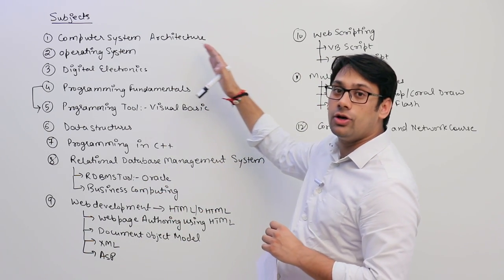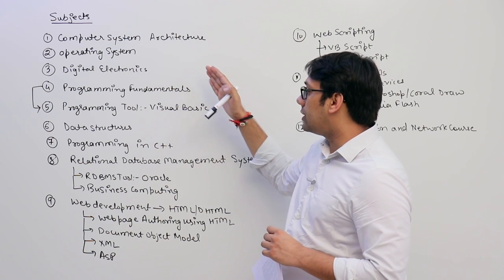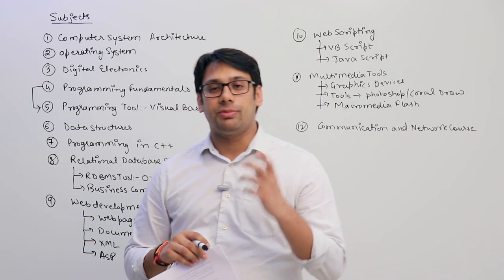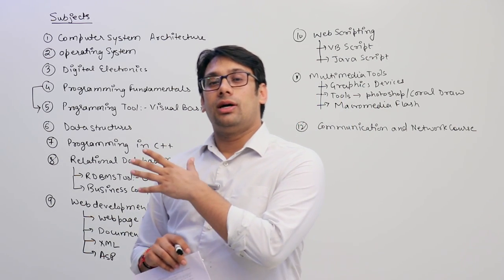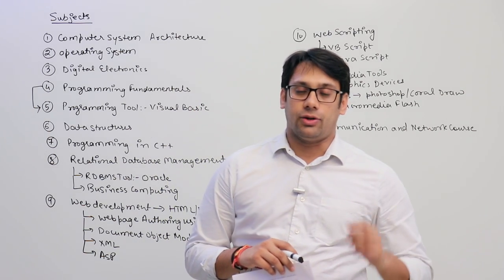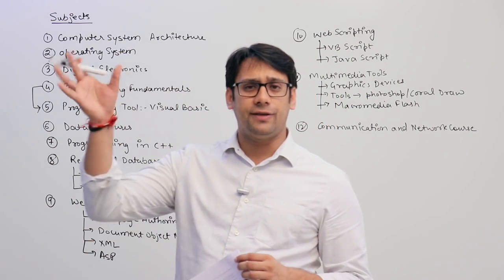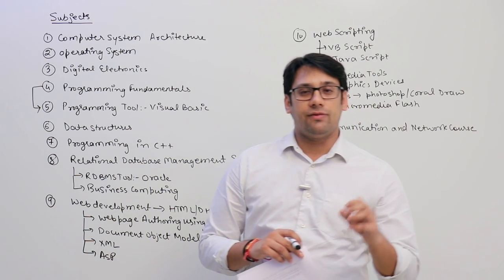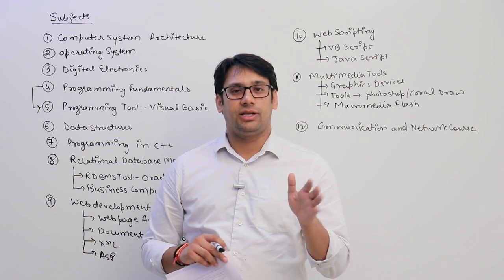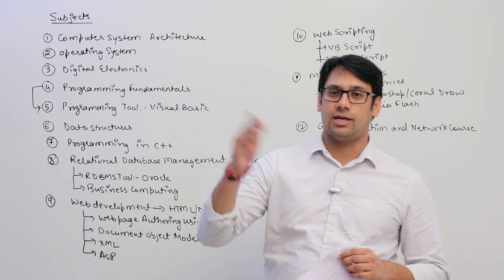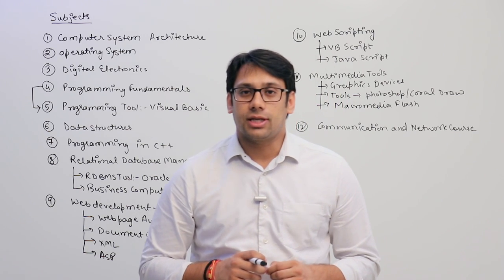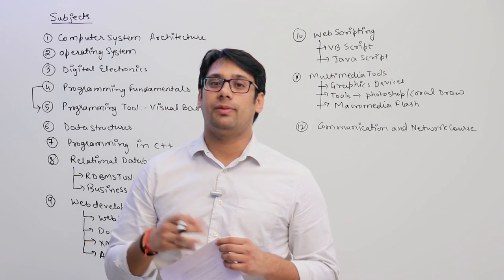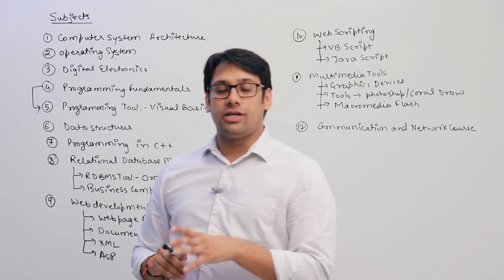The technical portion includes Computer System Architecture, Operating System, Digital Logic, Programming Fundamentals, Data Structures, Programming in C, and Relational Databases. This is the whole portion that you have to study for the UGC-NET examinations. Now there are some portions that are ready for us, and some portions that are being prepared.